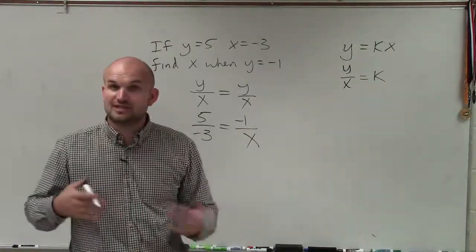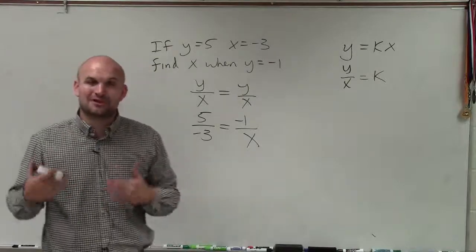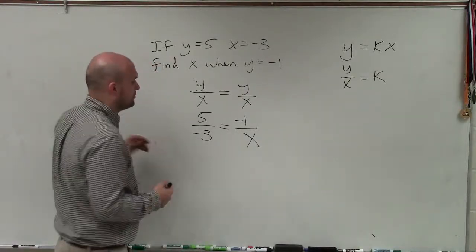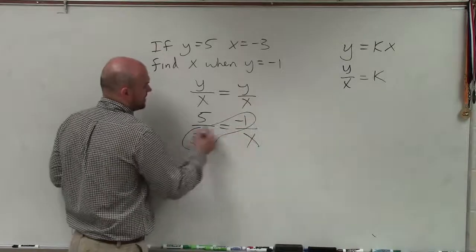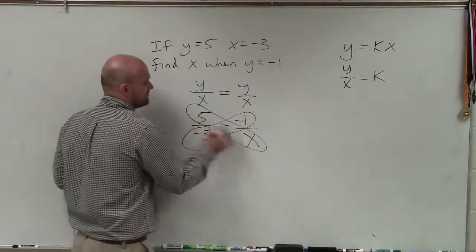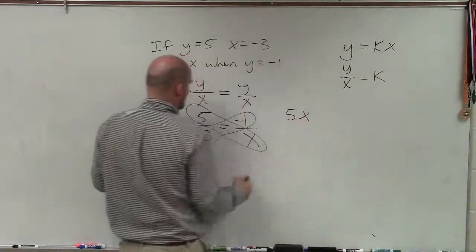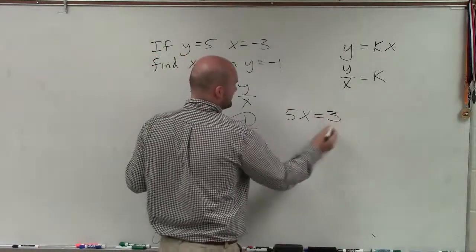What we have here is a ratio equal to another ratio, which creates a proportion. To solve for a variable in a proportion, we simply apply the cross product, where I do 5 times x, which is 5x, equals negative 3 times negative 1, which is positive 3.